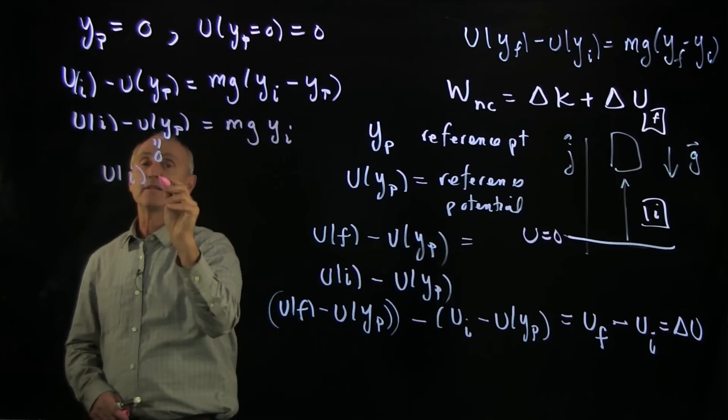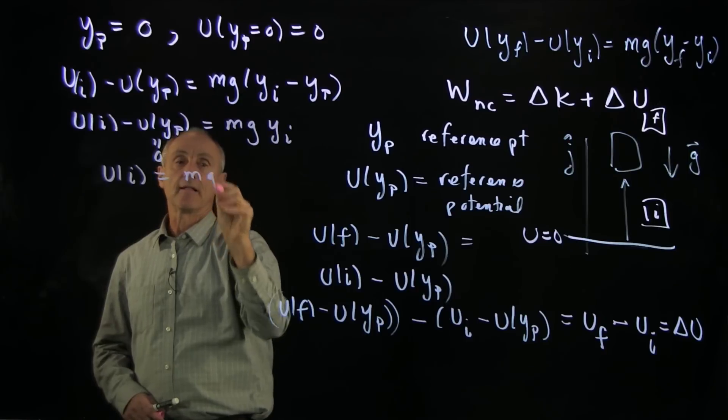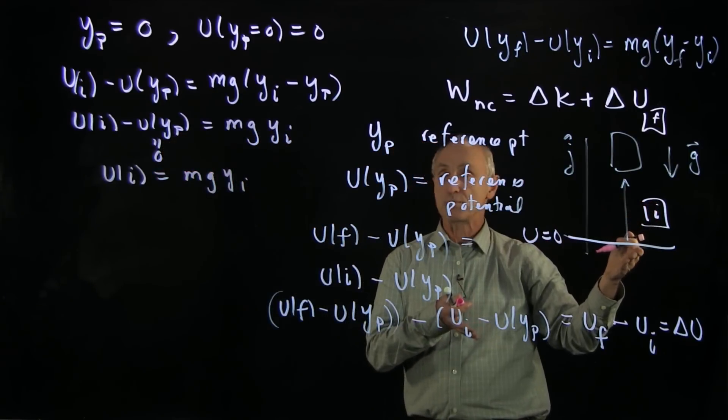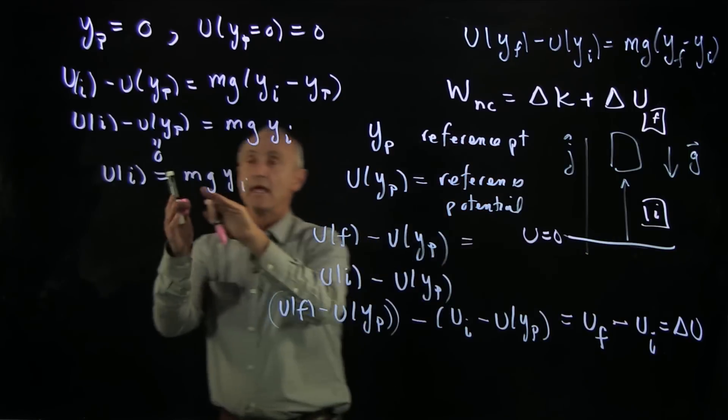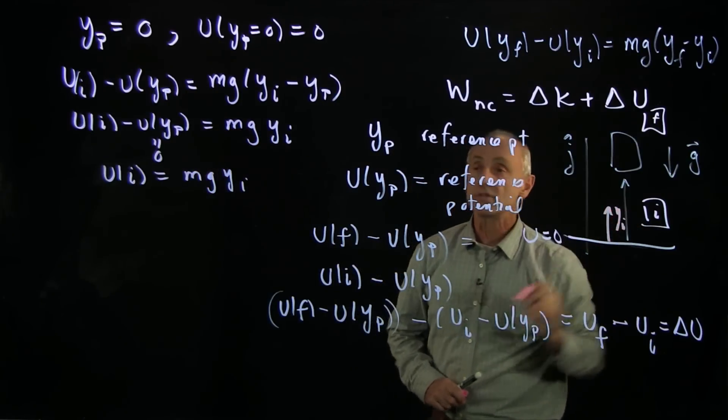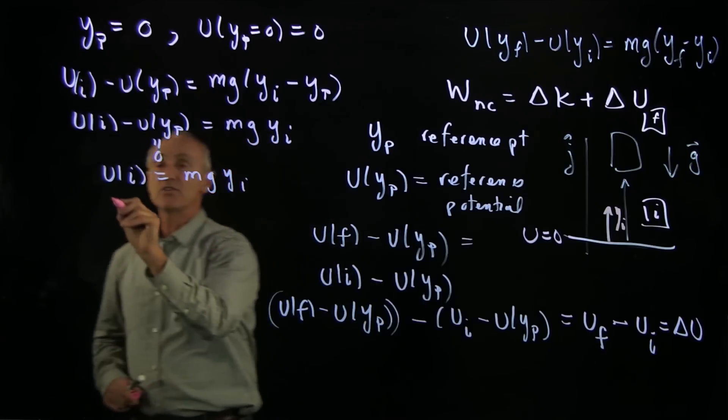And so we have the statement that the potential energy difference between our initial state and the reference point is just mg where yi is the height that the initial state is above the reference point.